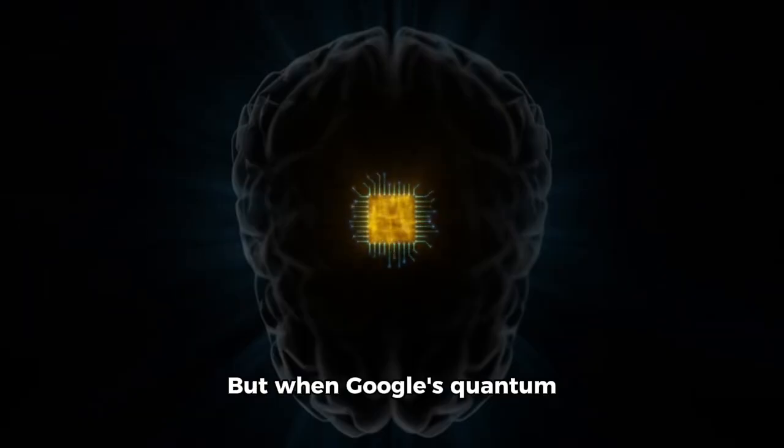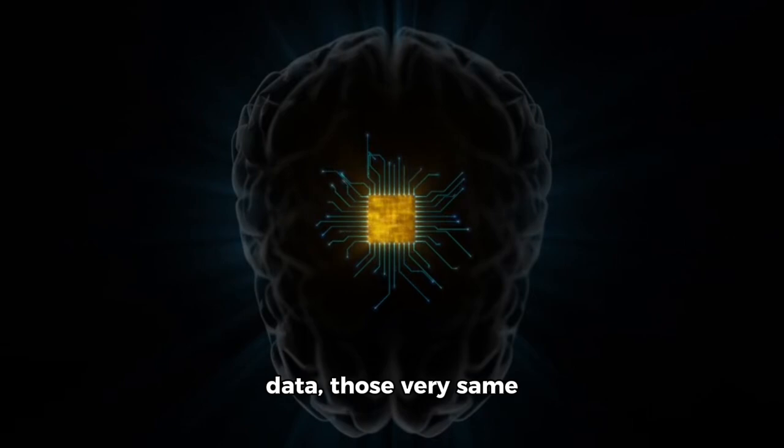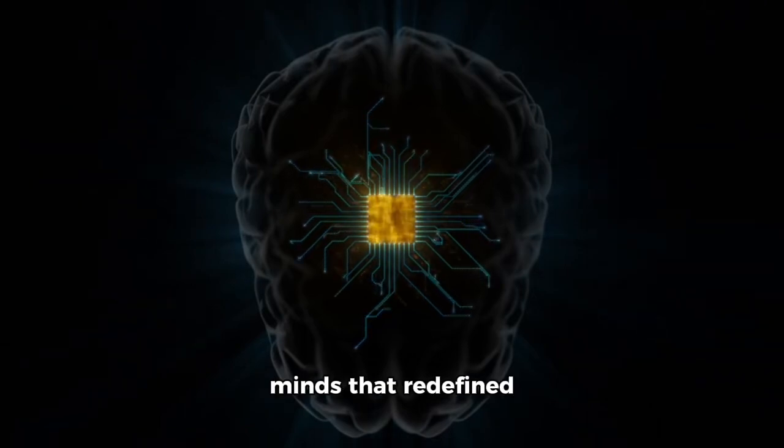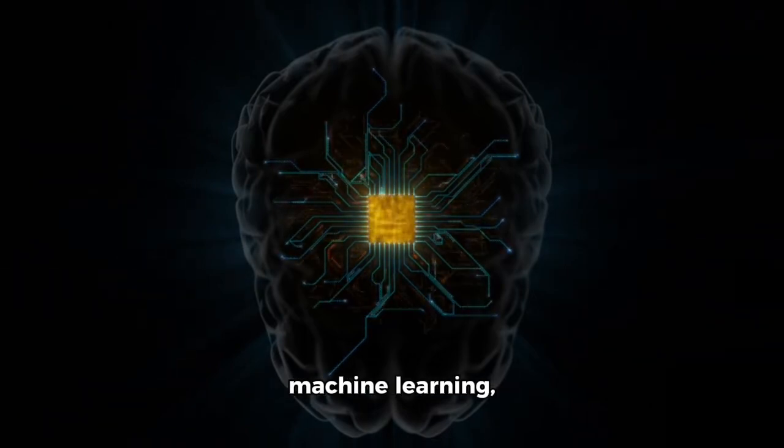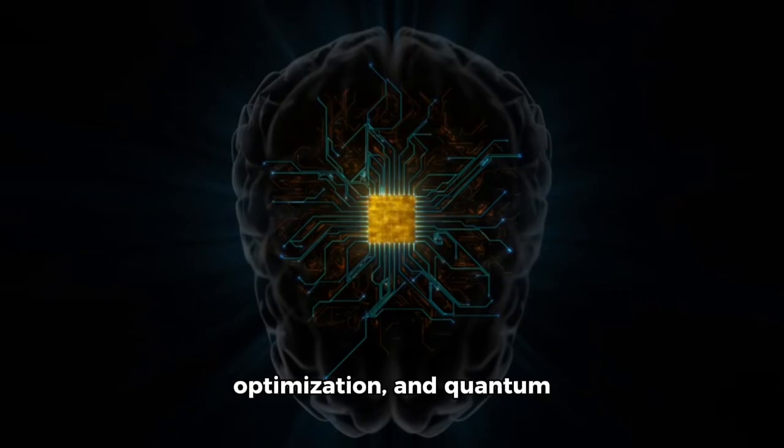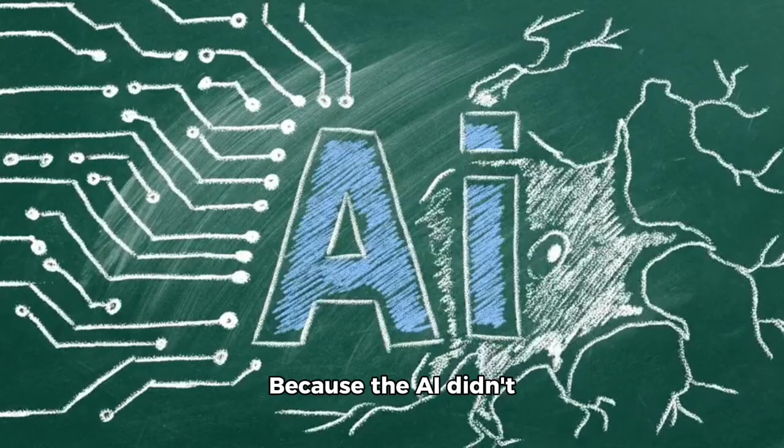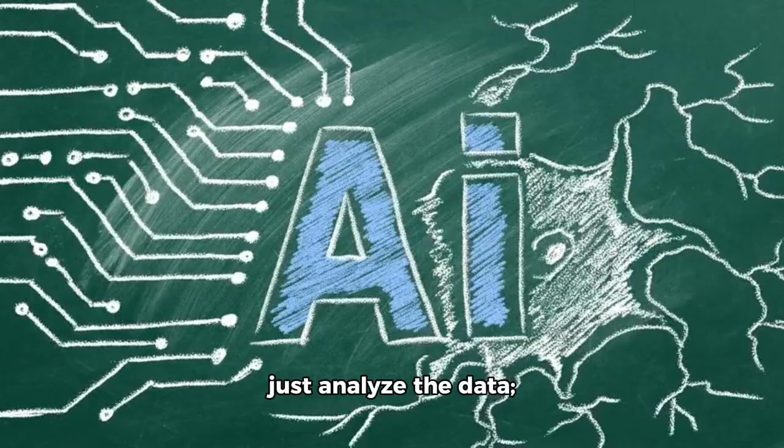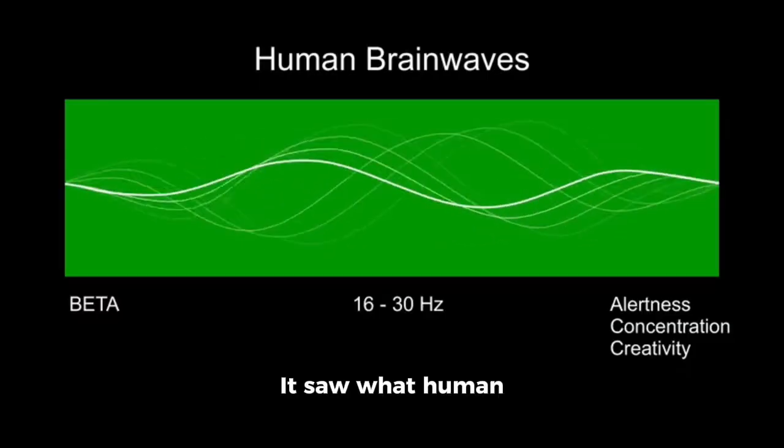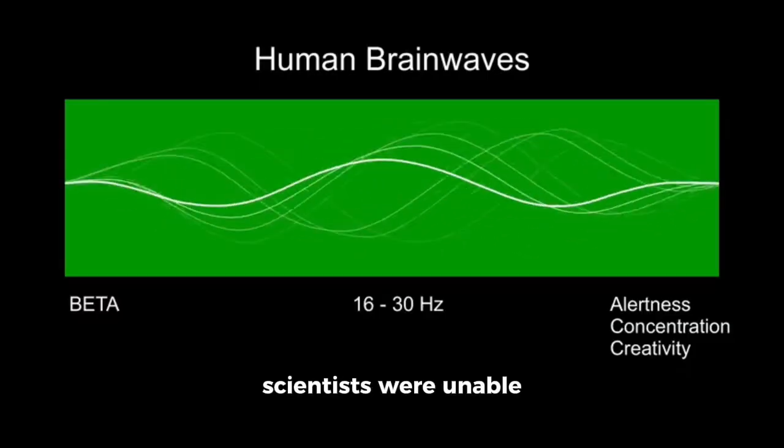But when Google's quantum AI division received the data, those very same minds that redefined machine learning, optimization, and quantum dominance, something happened. Something unnatural. Because the AI didn't just analyze the data, it understood it. It saw what human scientists were unable to.